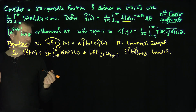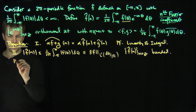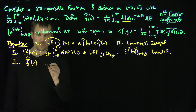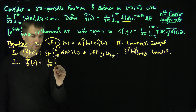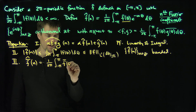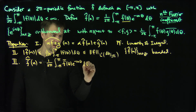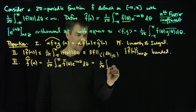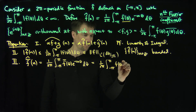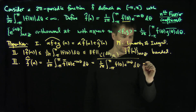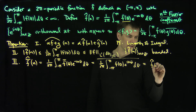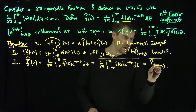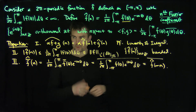The third property concerns conjugation. If I look at f̄̂(n) — the Fourier coefficient of the complex conjugate of f — this equals 1 over 2π times the integral from negative π to π of f̄(θ) e^(−inθ) dθ. Since e^(−inθ) is the conjugate of e^(inθ), I can pull the bar out, giving 1 over 2π times the integral of f(θ) e^(inθ) dθ, all conjugated. So f̄̂(n) = f̂(−n) conjugated — taking the conjugate of f sends n to −n in the Fourier coefficient.